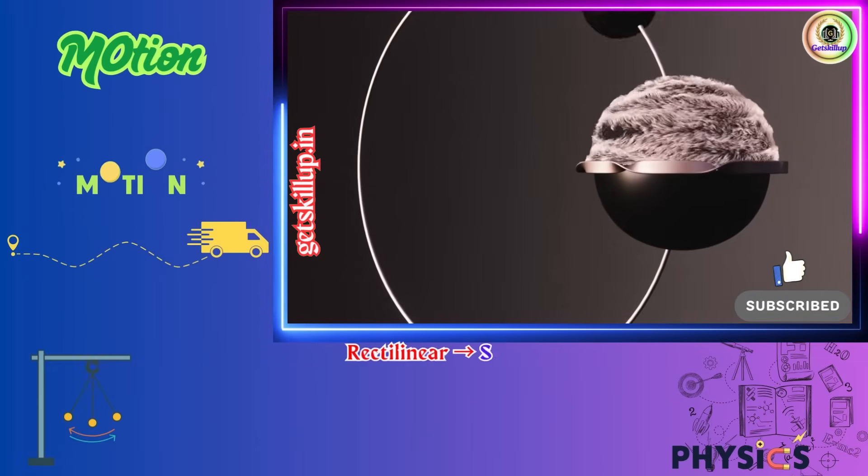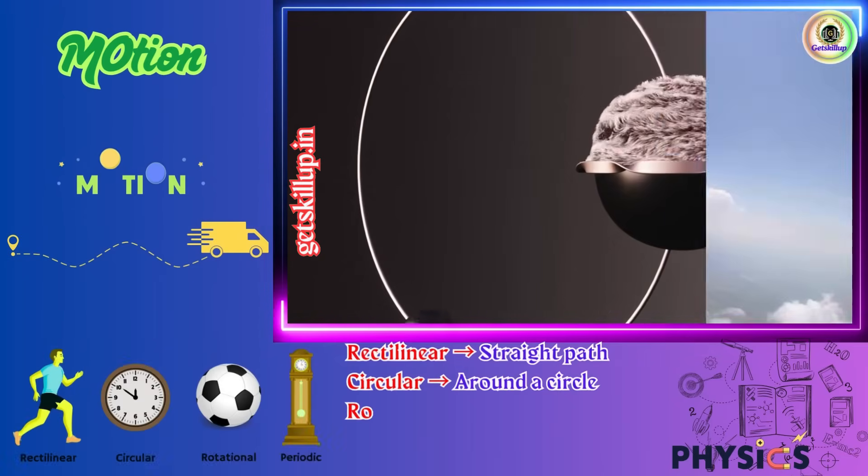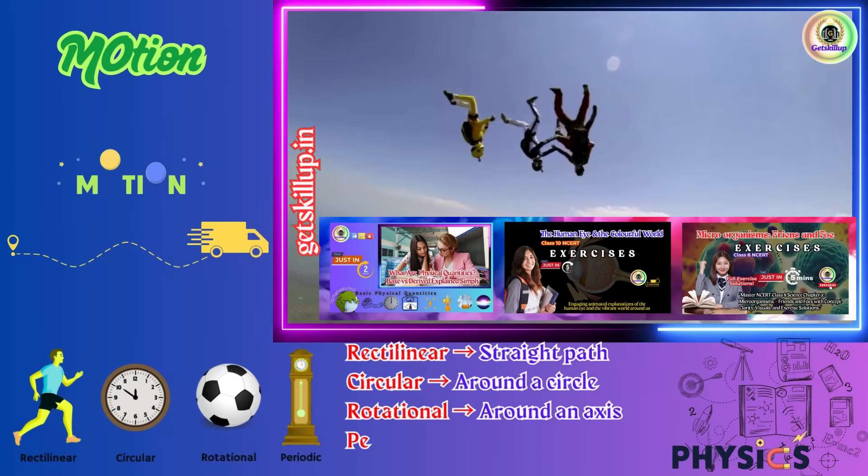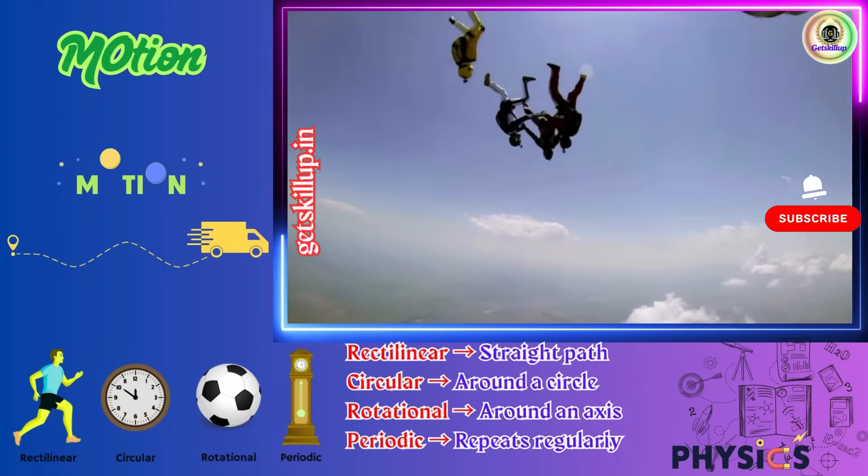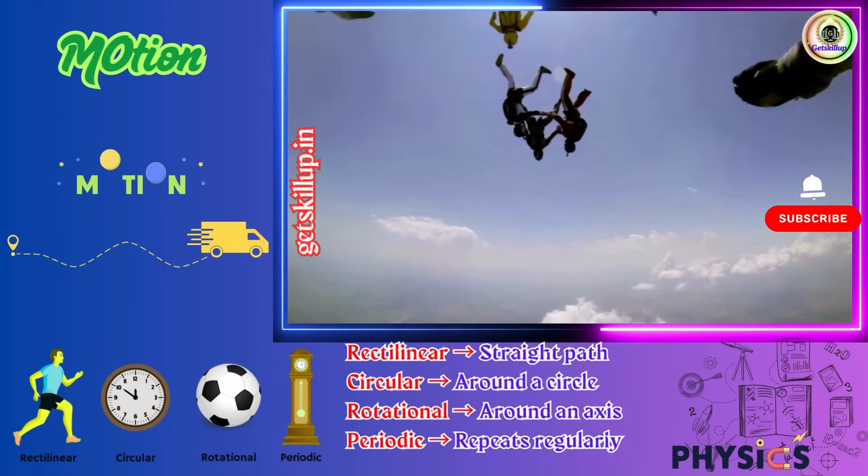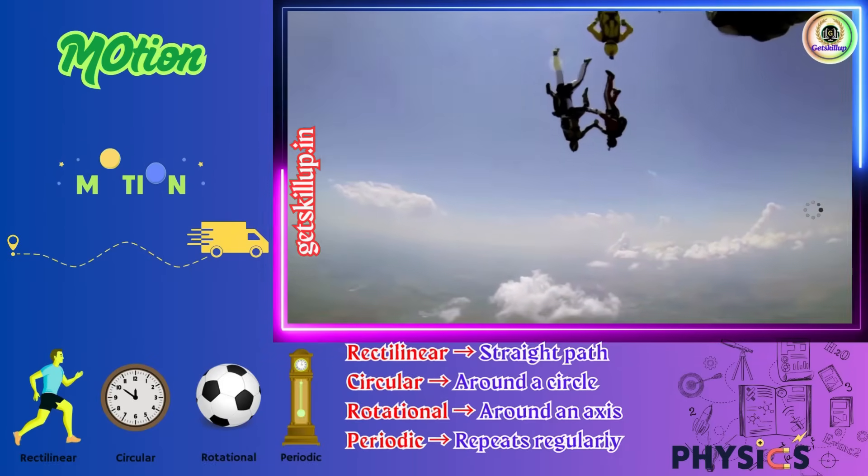Recap. Rectilinear, straight path. Circular, around a circle. Rotational, around an axis. Periodic, repeats regularly. And remember, one object can have more than one type of motion at the same time.